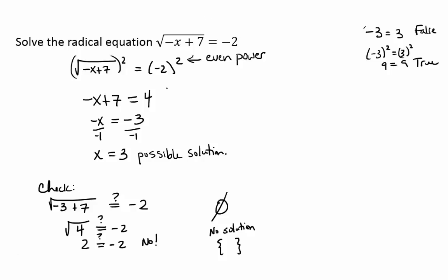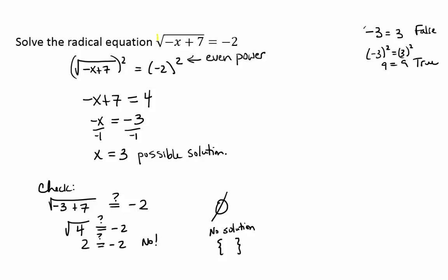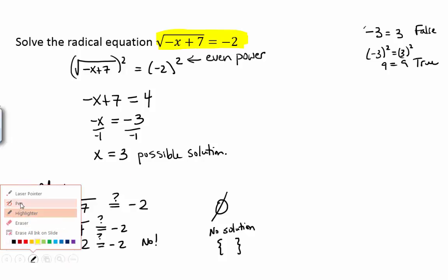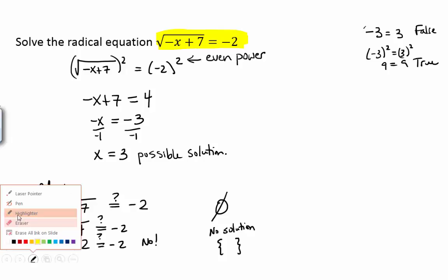How could you have known, looking back at the original equation, that we were going to get no solution? You can't take the square root and get a negative number. It's not always that obvious, but in this particular case you didn't actually have to go through all the steps if you noticed the square root is never going to turn out to be a negative number. I hope you found this video useful — if you did, please remember to like it.